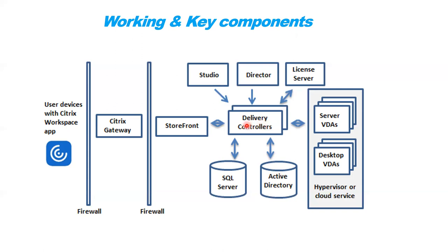If credentials are valid, the request goes back to the Delivery Controller, and from the Delivery Controller the request goes to the SQL Server. In the SQL Server database, the Delivery Controller verifies which application or desktop is allocated or configured for that particular user. After getting that data, the Delivery Controller forwards the request to the hypervisor, where all those applications are hosted as virtual machines.